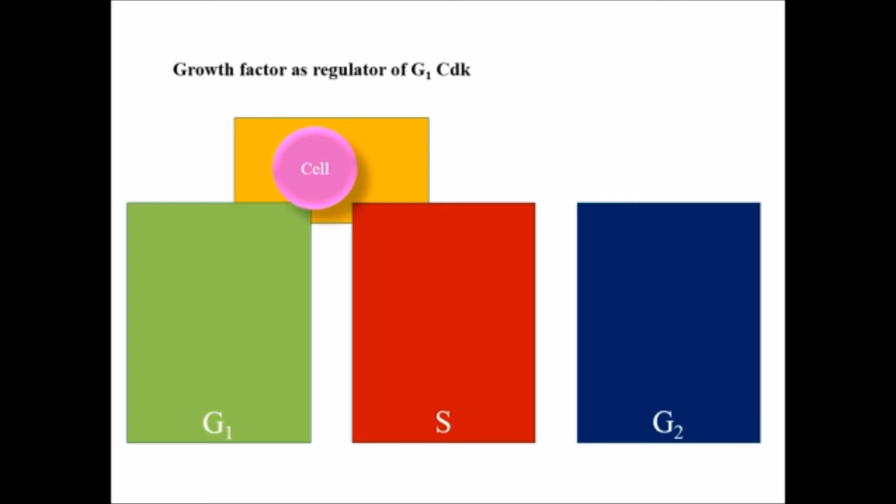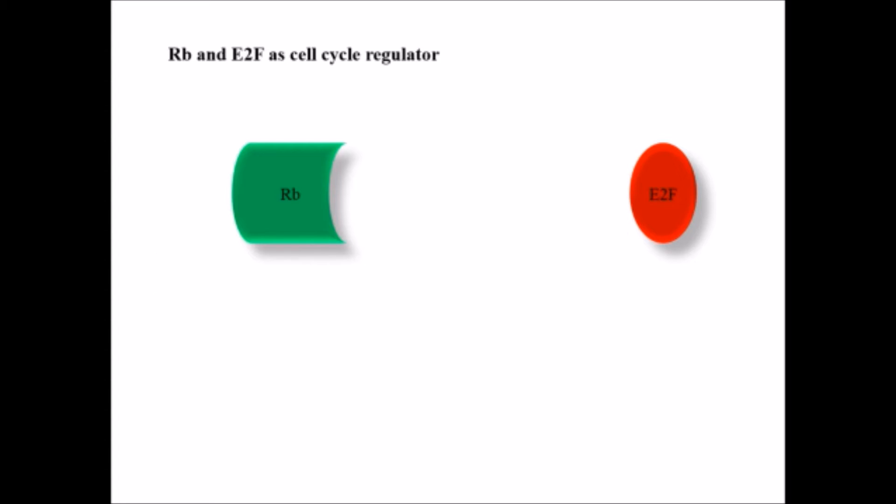Since cyclin D1 is a critical target of growth factor signaling, it might be expected that defects in cyclin D1 regulation contribute to the development of human cancers, including lymphomas and breast cancers. Another important factor involved with growth regulation is Rb, the retinoblastoma protein, which is involved in cancer cell inhibition.